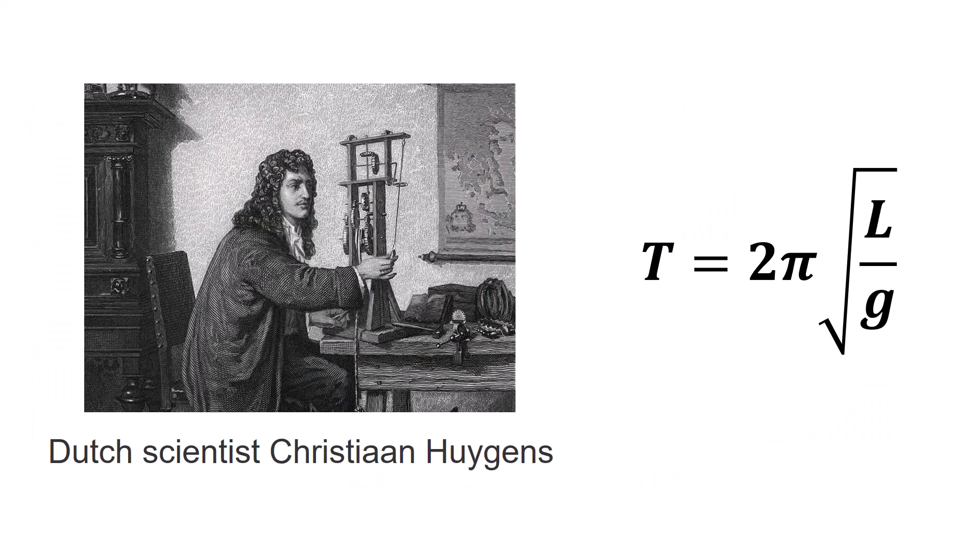However for the purpose of today's investigation we need to focus on the equation discovered by Dutch scientist Christian Huygens which is the period of a pendulum is equal to 2 times pi times the square root of length of pendulum divided by gravity.